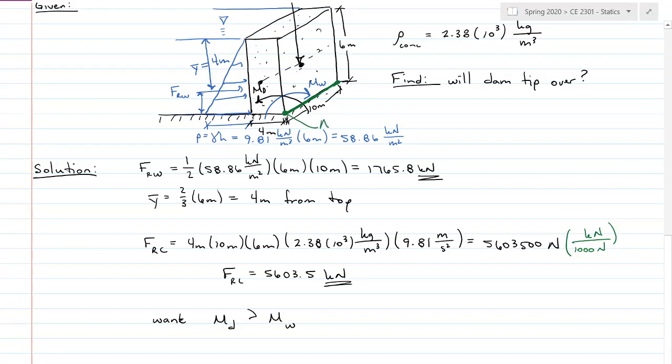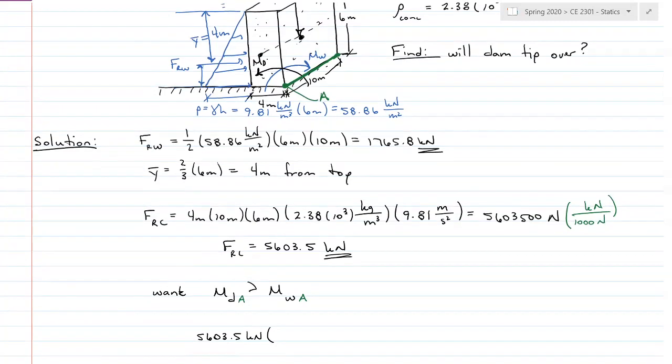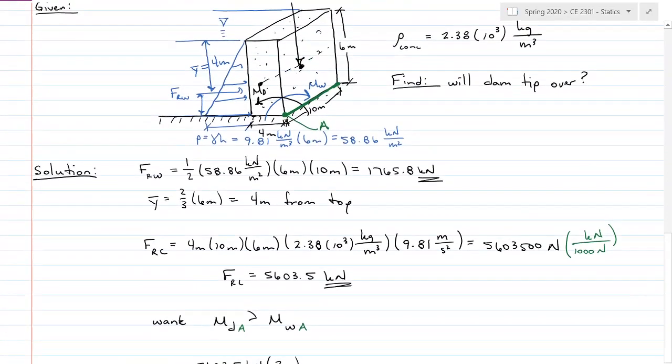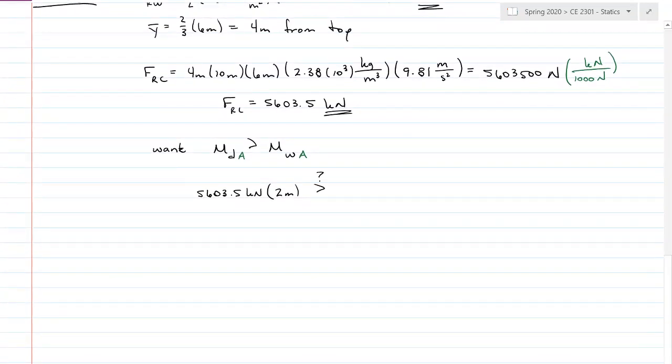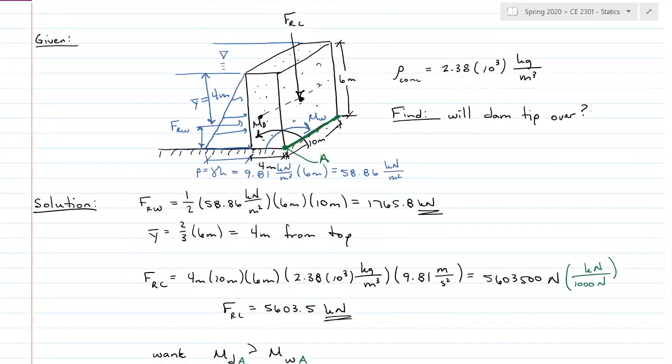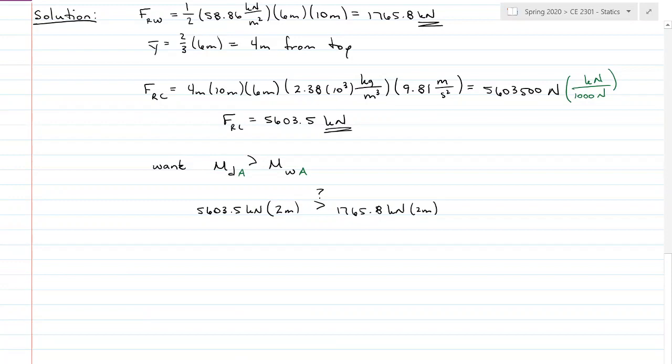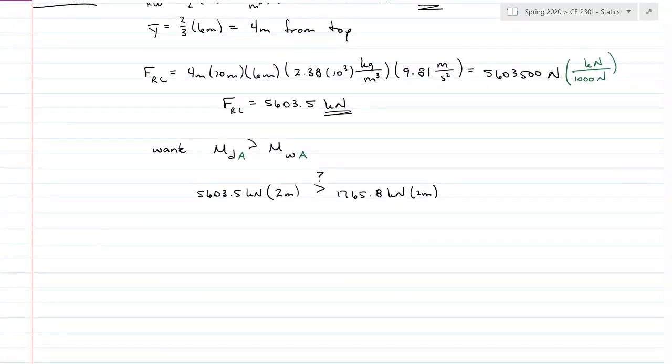So I'm going to call this point A. So that's moment dam A, moment water A. The dam moment is going to be 5,603.5 kilonewtons. And it's a vertical force, so it is acting horizontally 2 meters, because it's acting through the center of the shape, which would be 2 meters from A. And then is that greater than the water, which is 1765.8 kilonewtons, which is also conveniently acting 2 meters from A, from the bottom. See if it's 4 meters from the top, 6 minus 4 is 2 meters. So yes, it is greater than, yes, so the dam does not tip.